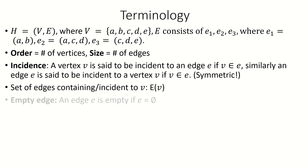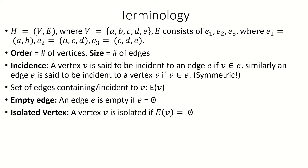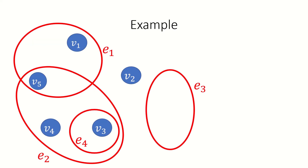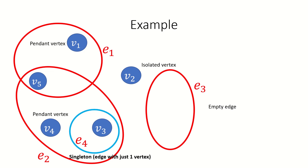Moving on, we can define empty edges to be edges that are incident with zero vertices — they are empty sets. We can also define isolated vertices: they are the vertices that are incident with zero edges. In this hypergraph, edge E sub 3 is empty, and vertex V sub 2 is isolated. Singletons are what we call edges that are incident with exactly one vertex, such as E sub 4 in this hypergraph.